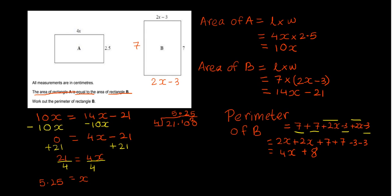A few mistakes today, sorry about that. 4x plus 8, so 14 minus 6 is 8, and that is the perimeter of B. That's how you answer this question. Thanks for watching.